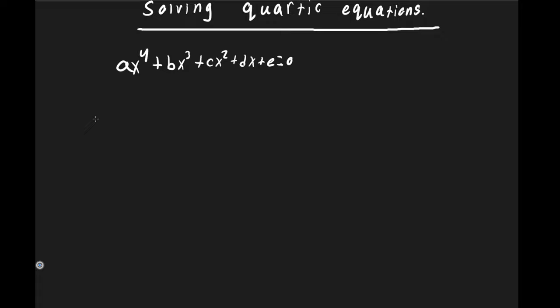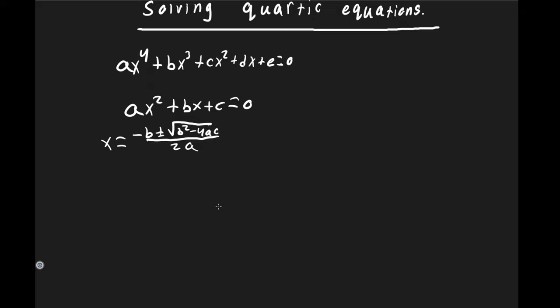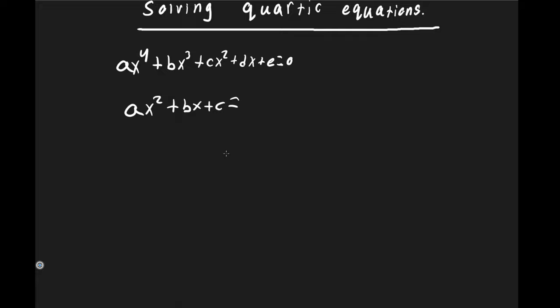Hello everyone. Today we'll be discussing how to solve quartics, which are mainly written in their standard form of ax⁴ + bx³ + cx² + dx + e = 0. Like quadratics, they behave similarly since they will always have at least two possible solutions. We have a formula for the quadratic — minus b plus or minus the square root of b² minus 4ac all over 2a. We would hope there is a formula as simple as the quadratic formula for the quartic, but sadly there is one — it's just quite long and not practical for any real uses.